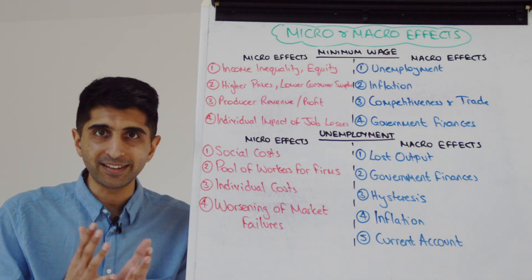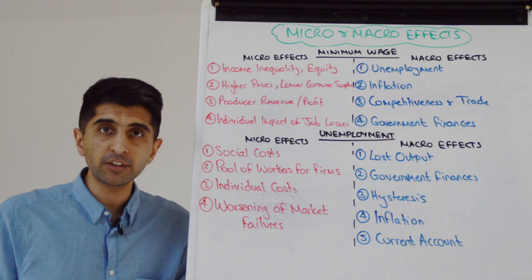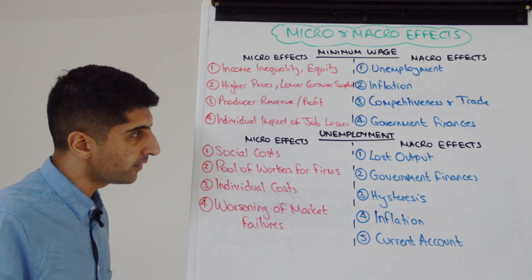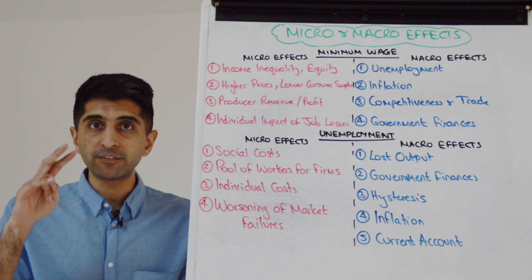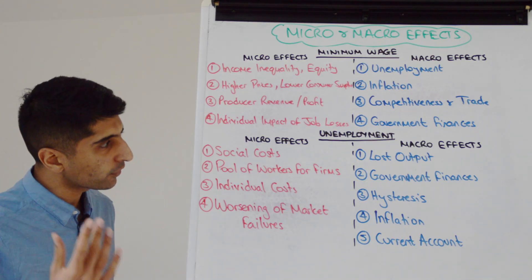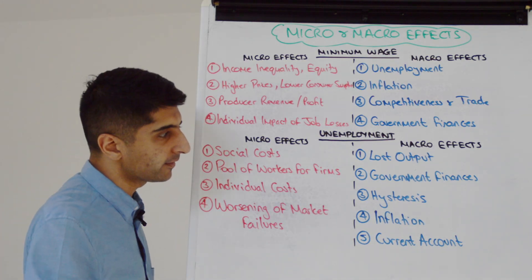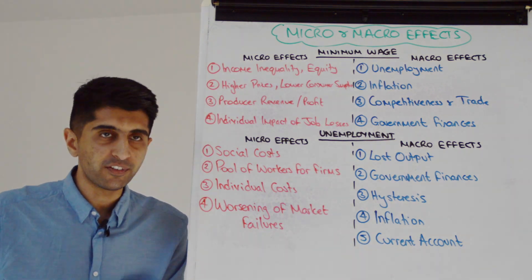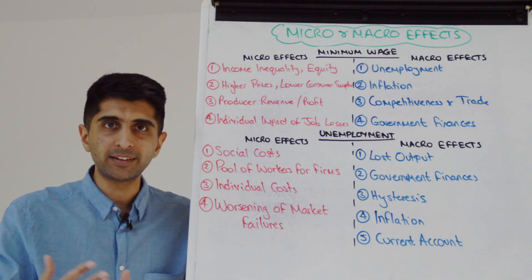What about unemployment — micro and macro effects there? It seems logical to go to the macro effects first. We can talk about lost output on a PPF diagram: the economy is going to be operating inside the frontier and therefore we get lost output, lost production of goods and services. There's the impact on government finances — governments have to spend more on welfare benefits and on dealing with the issues of unemployment. Also they're not receiving as much tax revenue because of high unemployment. Hysteresis — the impact on AD and long-term on LRAS. Lower inflation: go to your Phillips curve — when we get higher unemployment, we get low inflation as well. The impact on the current account: higher unemployment and lower incomes mean less spending on imports, giving potential benefits to the current account.